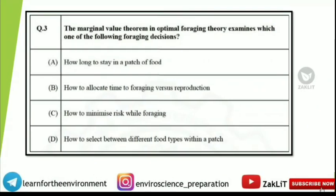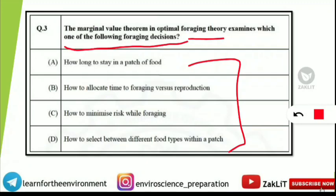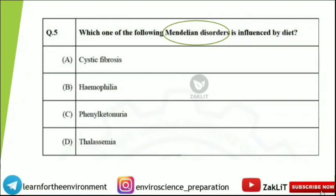The next question is: the marginal value theorem in optimal foraging theory examines which one of the following foraging decisions? You should read the options, and the answer will be revealed after a few seconds. The marginal value theorem examines how long a forager should stay in a patch of food. This concept has been discussed in depth — you can check the link in the eye button for more on the marginal value theorem.